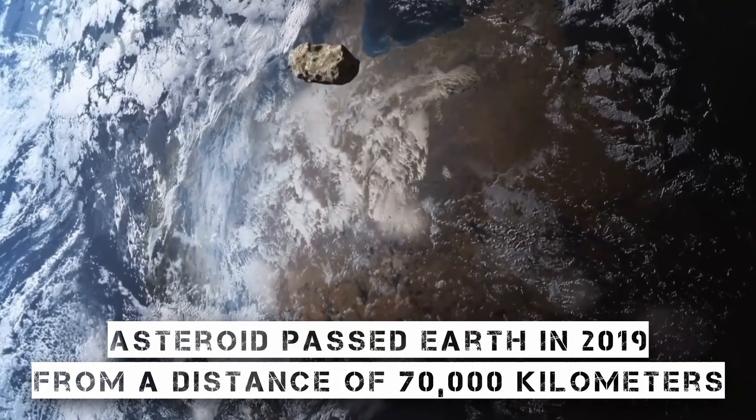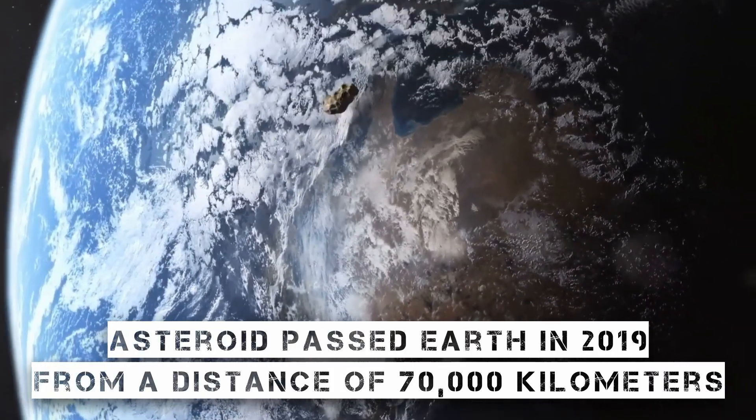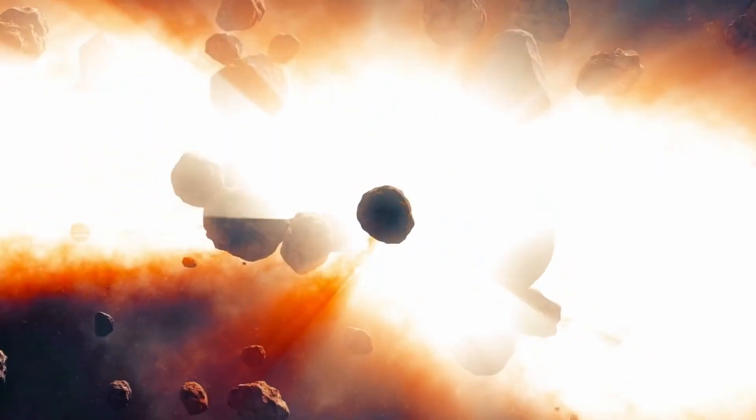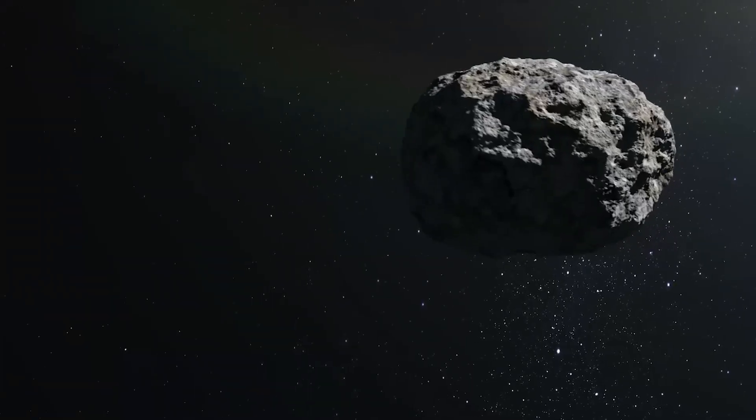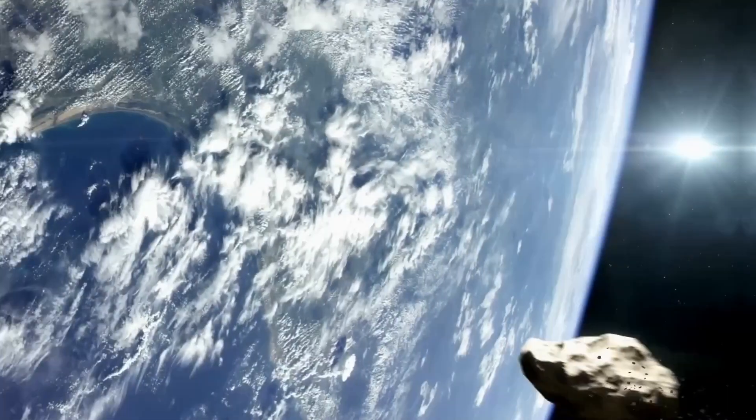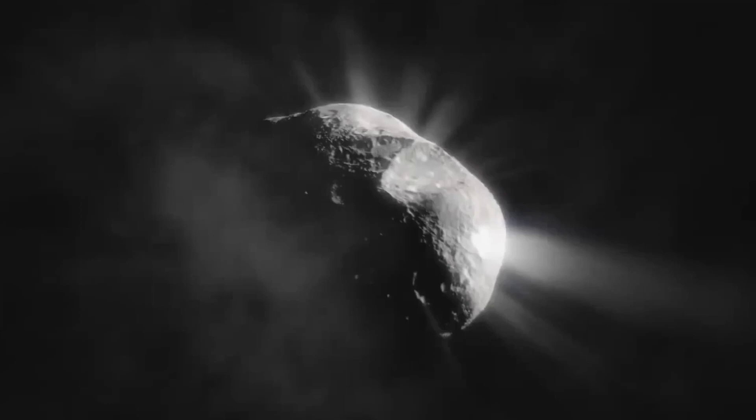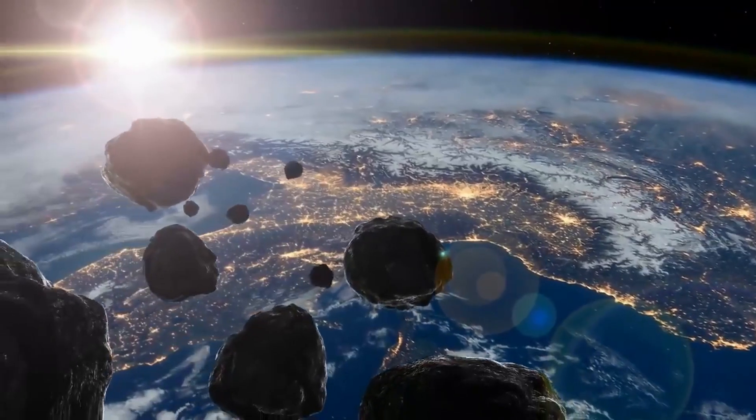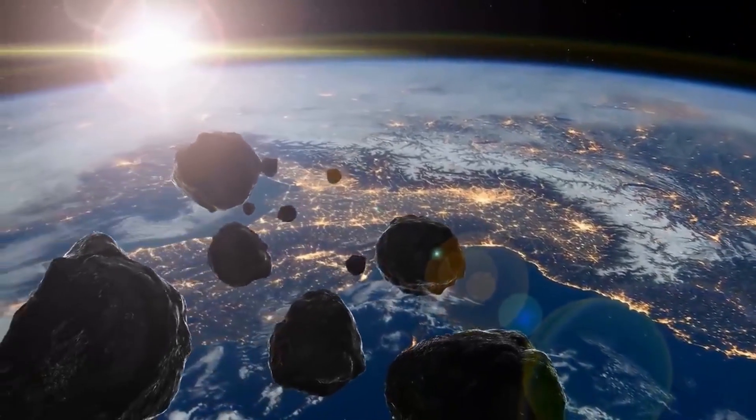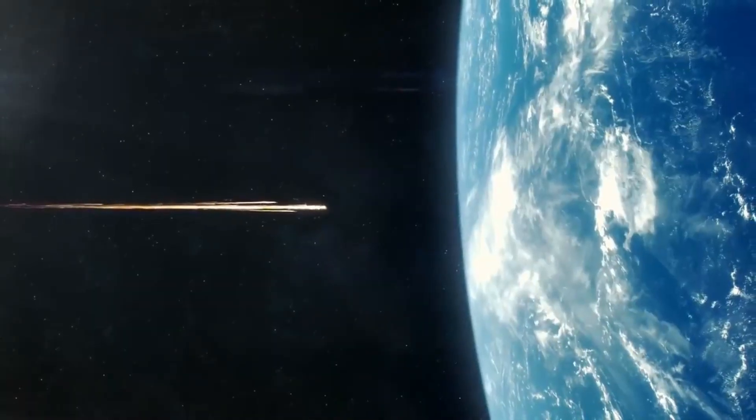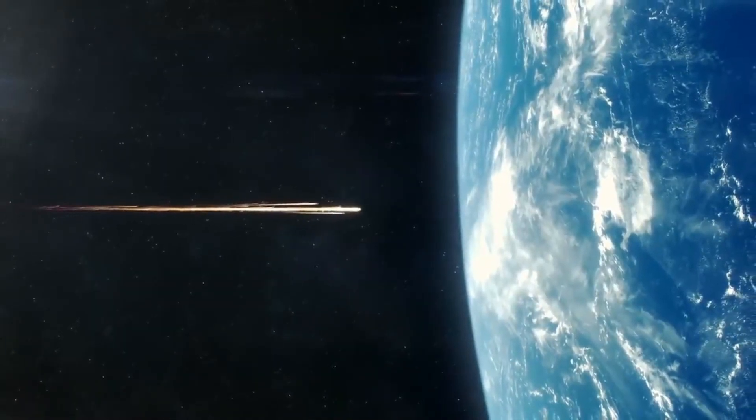Another asteroid passed Earth in 2019 from a distance of 70,000 kilometers. Just hours before it flew by, it was made public. Even though it wasn't as close, its size was far more alarming. These close calls serve as a reminder of the necessity for us to expedite the hunt for near-Earth objects. Because of observational blind areas and the fact that we can't constantly study the entire sky, we haven't yet discovered every item that might one day pass close to Earth.